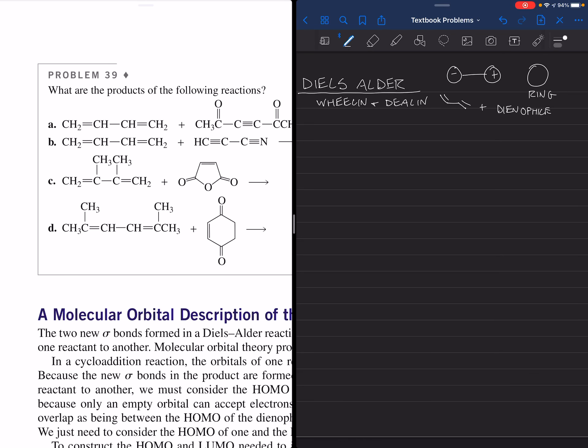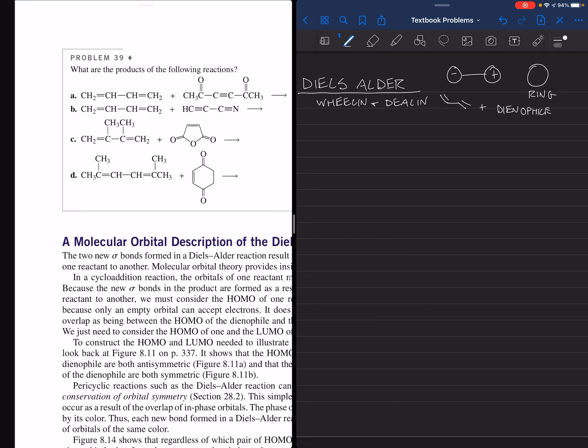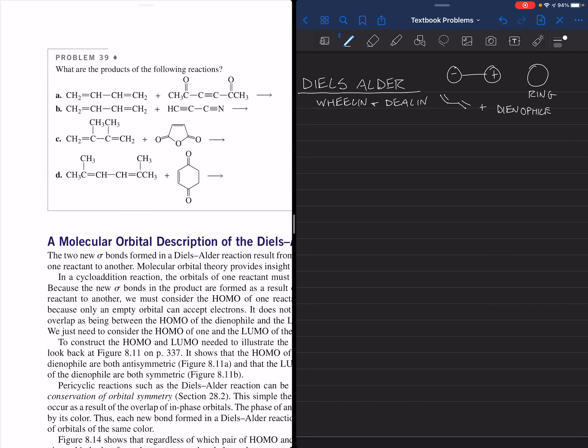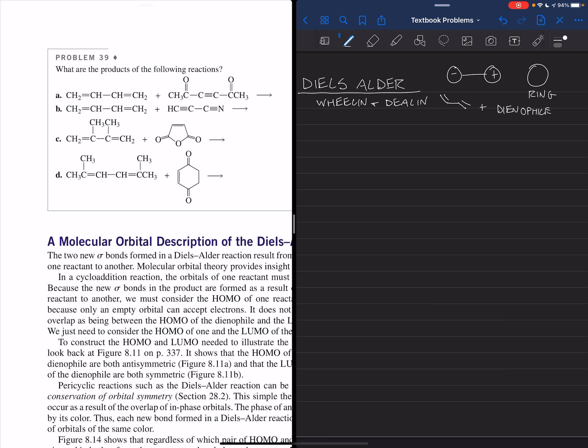I'm going to attempt to go through Diels-Alder reactions and see if we can come up with the answers to question 39 in the textbook, page 357. The thing with Diels-Alder that we want to remember is that he is wheeling and dealing. We're making a cyclic compound.